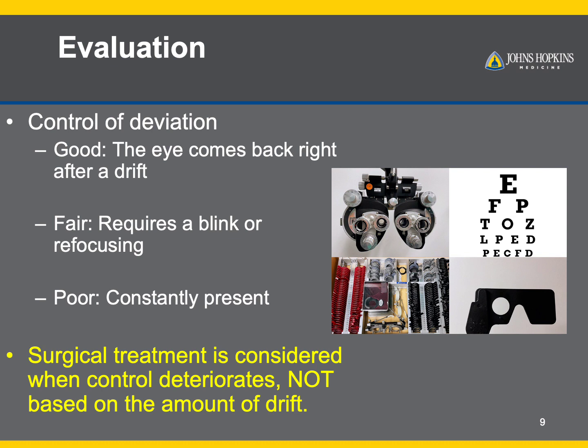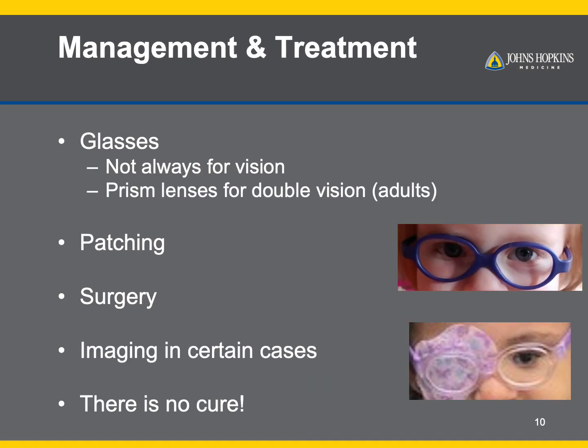We do not consider surgery based on just the amount of the drift. We look at whether the control is changing, whether depth perception is changing, or whether vision is affected. And we try conservative management before going to surgery. Management of strabismus will depend on the severity of the problem. If the problem is mild, meaning it is not always present or well controlled by the child, it may just be monitored to allow the visual system to develop on its own without any interference.